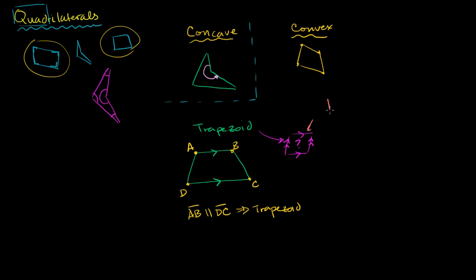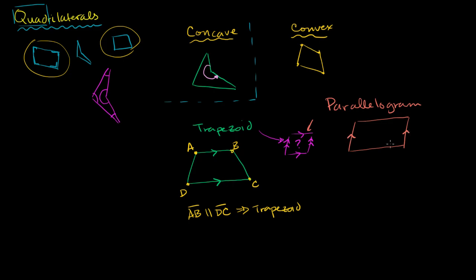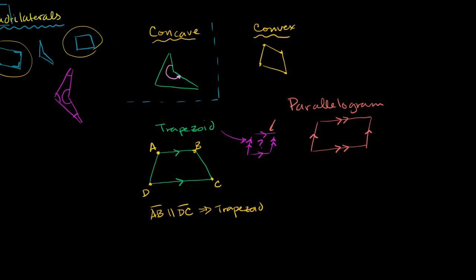So the one thing you can definitely call a quadrilateral with two pairs of parallel sides is a parallelogram. In a parallelogram, opposite sides are parallel — that side is parallel to that side, and this side is parallel to that side. Parallelograms can be subdivided even further. If the four angles in a parallelogram are all right angles, you're dealing with a rectangle.